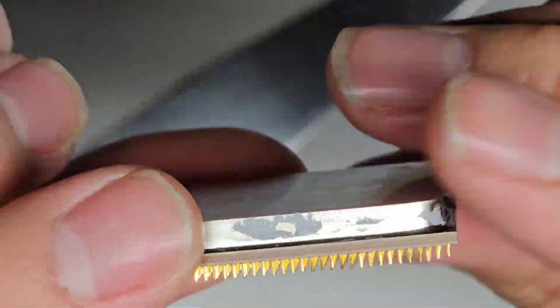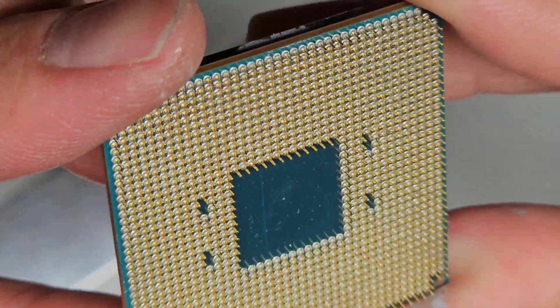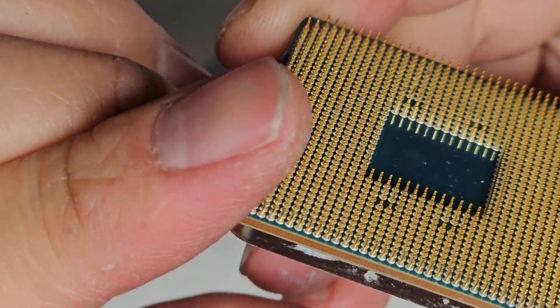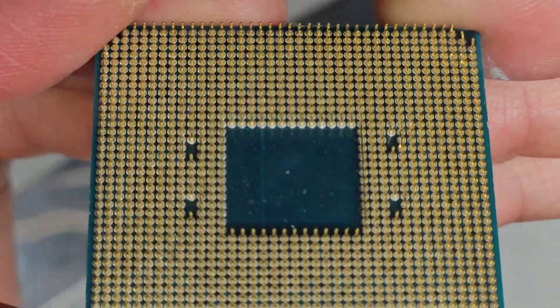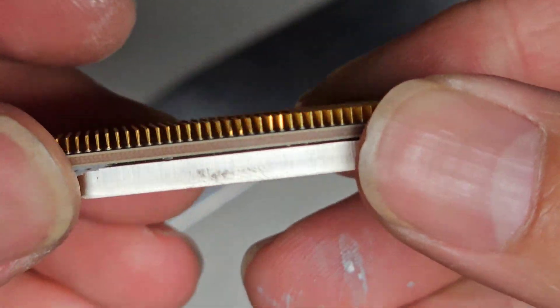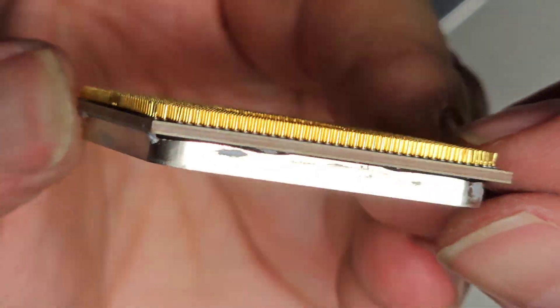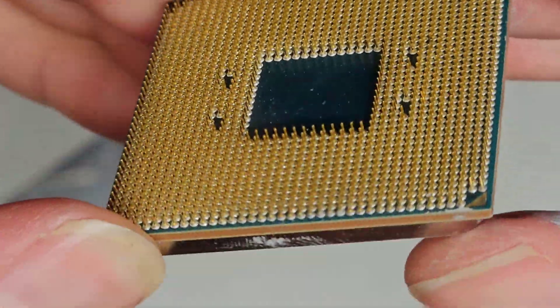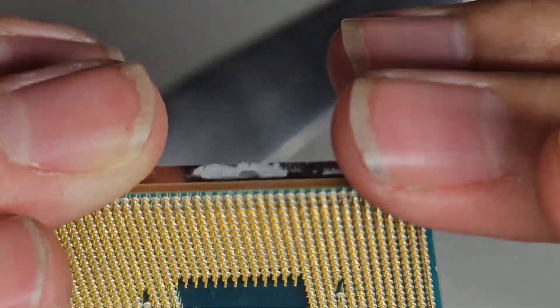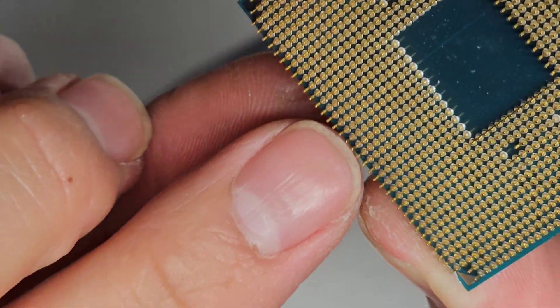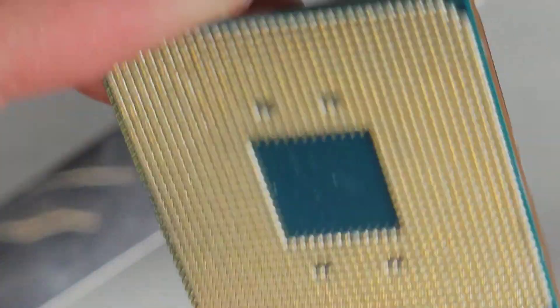All right, and then once you're done bending it, you just want to kind of look around. Double check, make sure all the pins look straight. You just look down the edge like this, and kind of see if everything looks lined up. Again, the ones that got bent might be a little wobbly, but that's okay as long as the tips of the things line up.